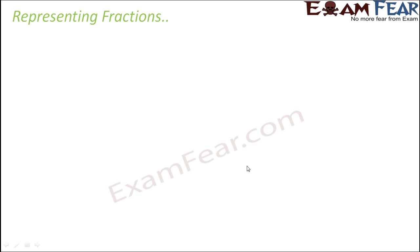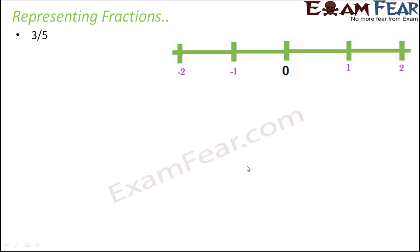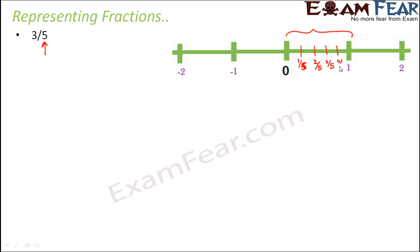So let us try to represent a few more fractions on the number line. Let's take 3 by 5. Focus on the denominator — the denominator here is 5. That means we need to divide one block into 5 equal parts. So we divide it into 1, 2, 3, 4 and 5 — five equal parts. The first part would be 1 by 5, this would be 2 by 5, this would be 3 by 5, this would be 4 by 5, and this one is 5 by 5. So we had to locate 3 by 5, and 3 by 5 is this point.